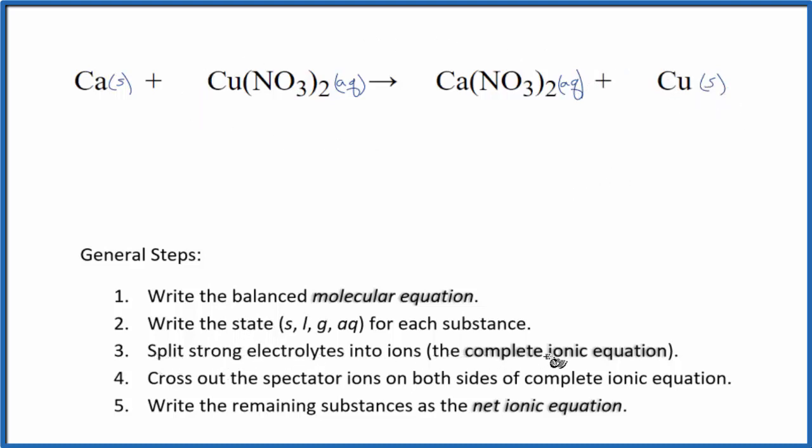Now we can split the strong electrolytes apart into their ions, and this is going to be the complete or total ionic equation. So the strong electrolytes, these are the ones that have aqueous behind them. They're going to dissociate, break apart into their ions.